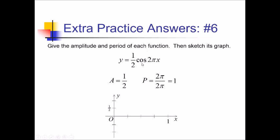Because I've got cosine, I'm starting at the top of the wave, which is 1/2. I take one step right and down, and keep doing that until I hit the bottom of the wave at negative 1/2. Then I bounce back up — one step over, one step up, over and up. This is a whole period. So let me just connect the dots with a nice cosine curve and call this one done.